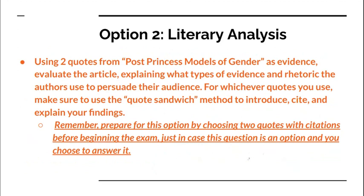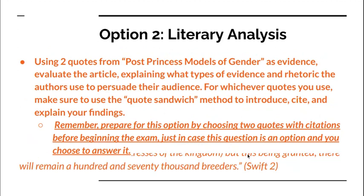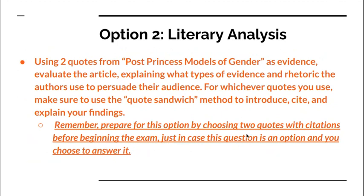Option number two: using two quotes from Post-Princess Models of Gender as evidence, evaluate the article explaining what types of evidence and rhetoric the authors use to persuade their audience. For whichever quotes you use, make sure to use the quote sandwich method to introduce, cite, and explain your findings. Remember for this option you'll need to do a little bit of different preparation because you're responsible for choosing two quotes from this article ahead of time.